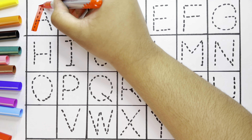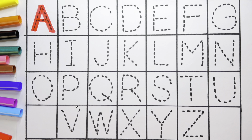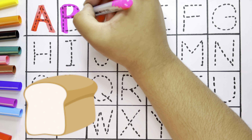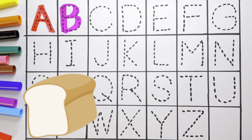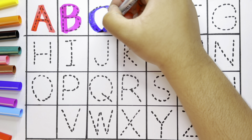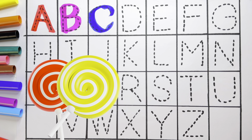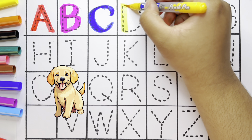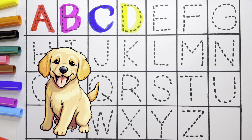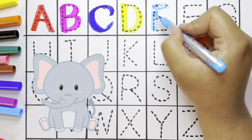A, A for airplane. B, B for bun. C, C for candy. D, D for dog. E, E for elephant.